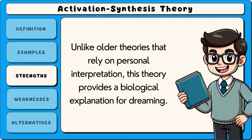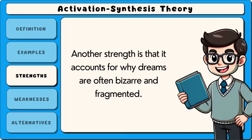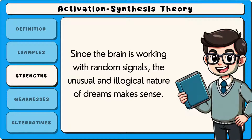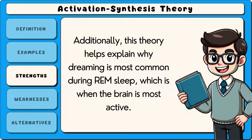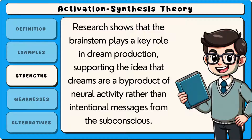Unlike older theories that rely on personal interpretation, this theory provides a biological explanation for dreaming. Another strength is that it accounts for why dreams are often bizarre and fragmented. Since the brain is working with random signals, the unusual and illogical nature of dreams makes sense. Additionally, this theory helps explain why dreaming is most common during REM sleep, which is when the brain is most active. Research shows that the brainstem plays a key role in dream production, supporting the idea that dreams are a by-product of neural activity rather than intentional messages from the subconscious.